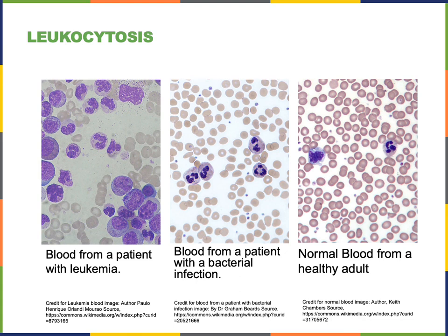Leukocytosis can be seen in a wide variety of infections, and there are several different types depending on which specific lineage of leukocytes is elevated. The image on the left shows an example of a type of leukemia where there is a large number of monocytes in the blood. Leukemia is a cancer of the bone marrow.